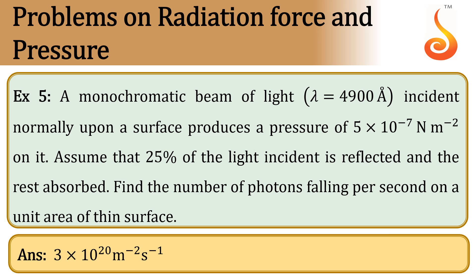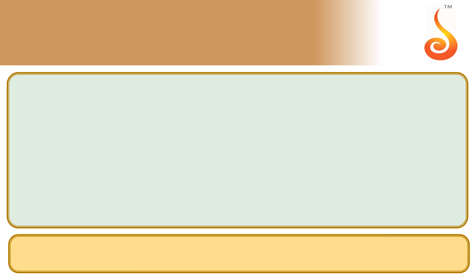The wavelength of light is given as 4900 angstroms, which is 49 × 10⁻⁸ meters. The radiation pressure is given as 5 × 10⁻⁷ newton per meter square. 25 percent of the light is reflected and 75 percent of the light is absorbed.